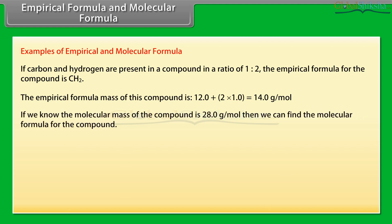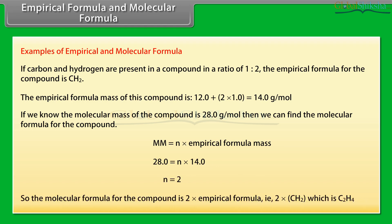If we know the molecular mass of the compound is 28.0 g/mol, we can find the molecular formula. MM equals N times empirical formula mass: 28.0 equals N × 14.0, so N equals 2. The molecular formula is 2 × CH₂, which is C₂H₄.